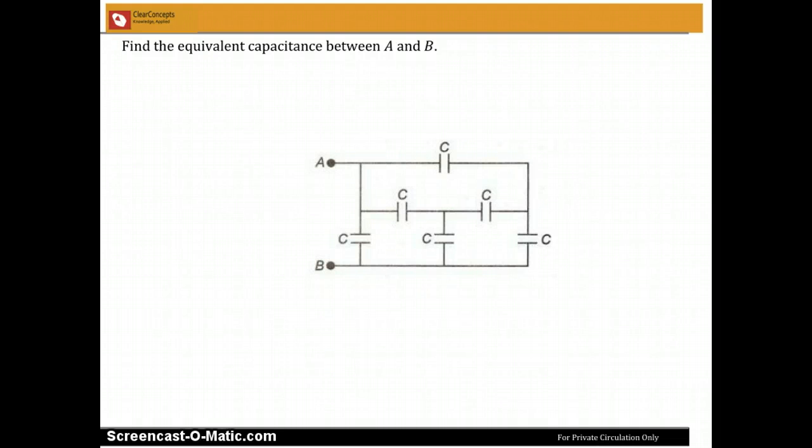Okay, Aayush, the question you asked was this here. So we will be given a circuit with capacitors in it, all having equal capacitance, and we have to find the equivalent capacitance between the points A and B.